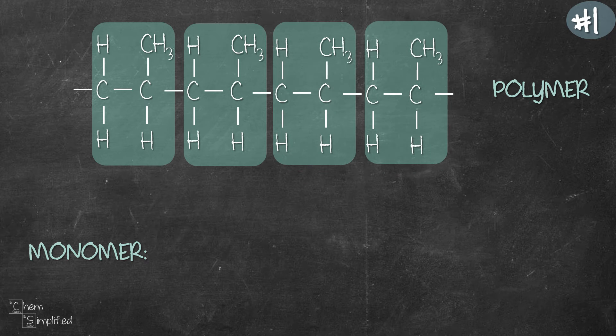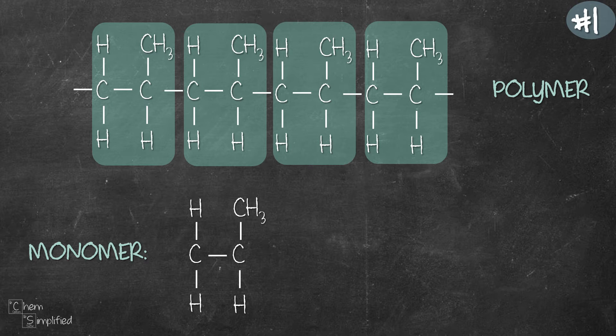Next, what we need to do is copy down the repeating unit without the open-ended bonds and then we place a double bond in the middle and that's the structure of our monomer.